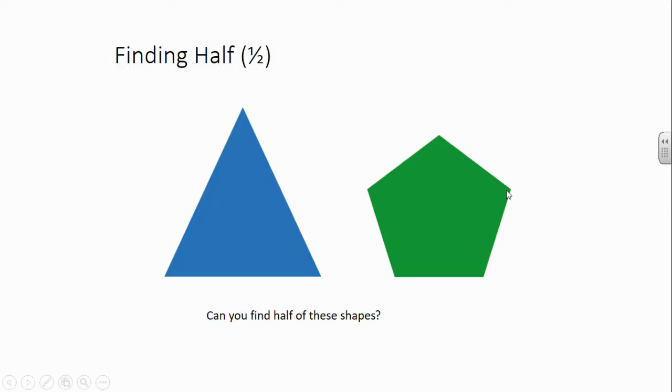Pause the video and draw a triangle and a pentagon. Can you find half of these shapes? Off you go. Let's see what Michelle has done. Yep. I have drawn a vertical line to split the triangle into half. Then I've shaded one part of it. The same with the pentagon. I've drawn a vertical line and then shaded in half.